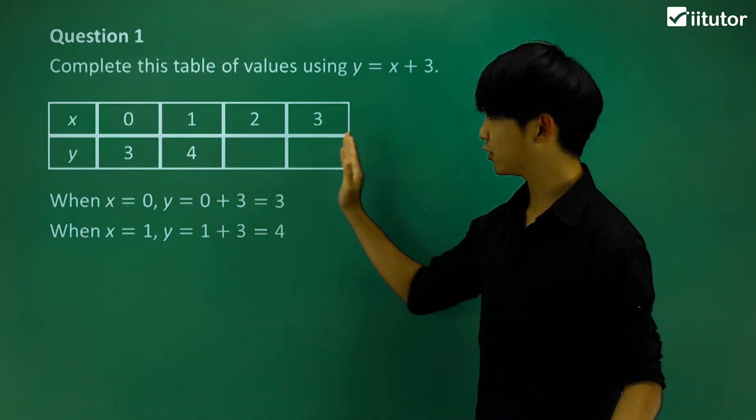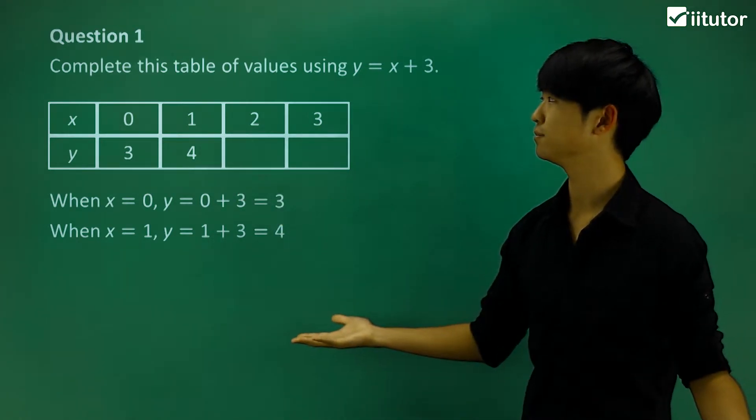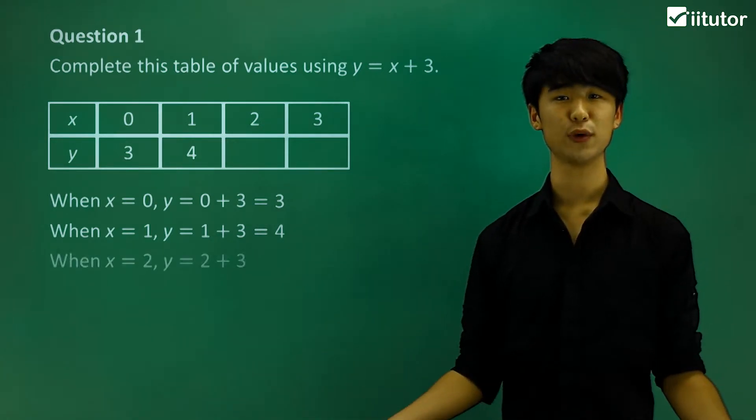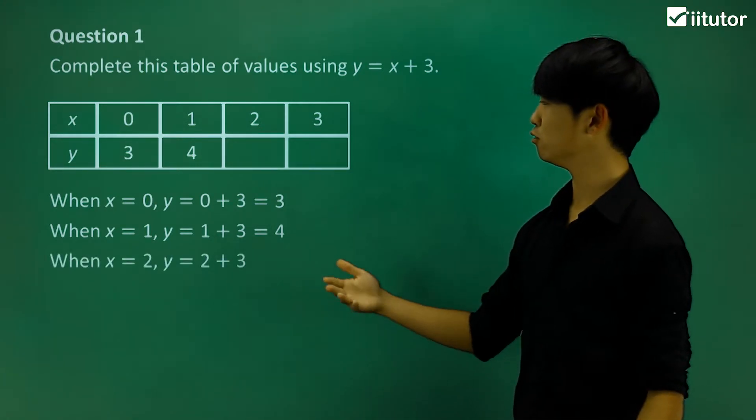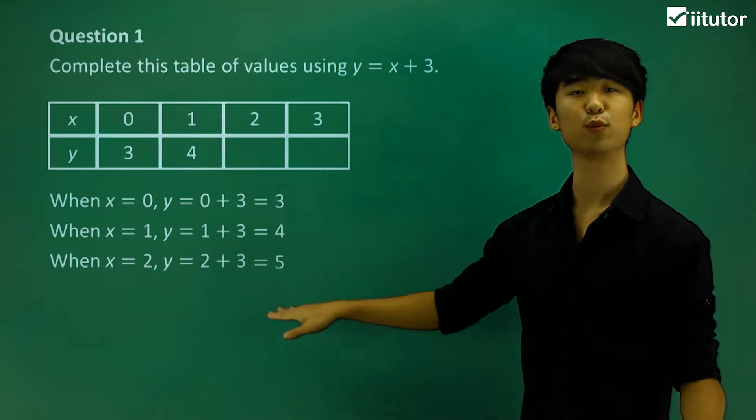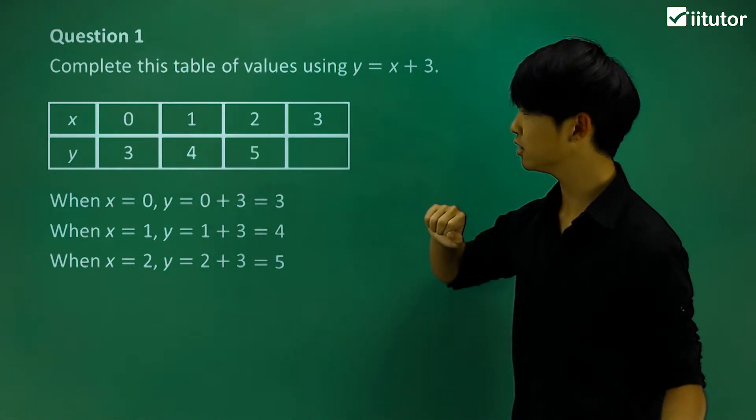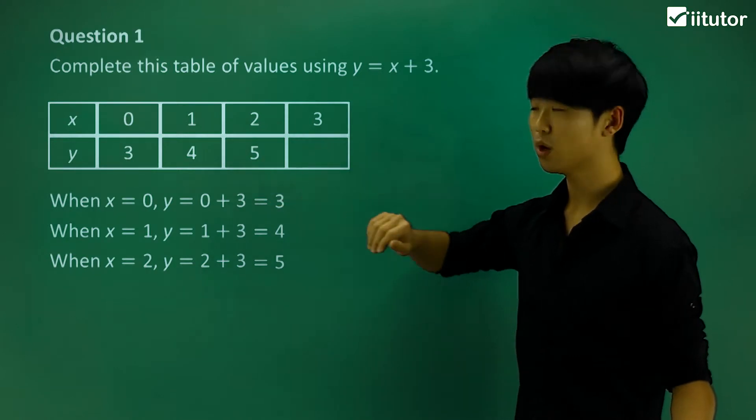Pretty straightforward. I want to keep doing this until we complete this table. That's the question. So what about x equals 2? When x equals 2, y equals 2 plus 3, which in turn would equal 5. Make sure you fill it into the table of values. So when x equals 2, y should equal 5.